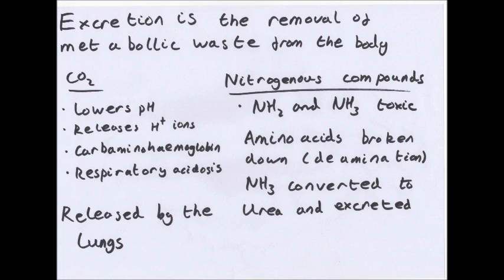Nitrogenous compounds: you break down proteins and amino acids because amino acids contain a lot of energy, almost as much as carbohydrates, so you don't want to waste that energy by getting rid of them. So we deaminate them. This breaks them down but releases a toxic NH2 — that's the amine section of the amino acid. It will first combine with another H+ to form NH3, which is ammonia and is even more toxic. It is then converted into urea and excreted.